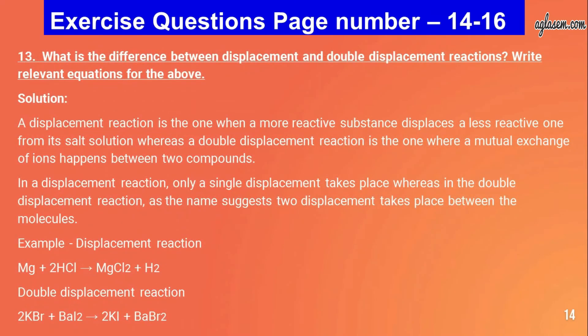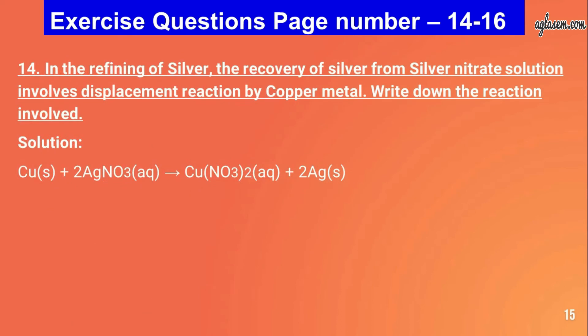Question number thirteen: what is the difference between displacement and double displacement reactions? A displacement reaction is when a more reactive substance displaces a less reactive one from its salt solution, whereas a double displacement reaction involves mutual exchange between two compounds. In displacement only a single displacement takes place, while in double displacement two displacements occur. Example of displacement: Mg + 2HCl → MgCl₂ + H₂. Example of double displacement: 2KBr + BaI₂ → 2KI + BaBr₂.